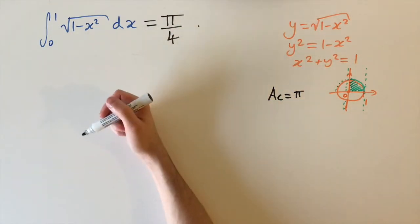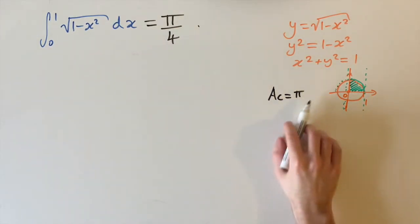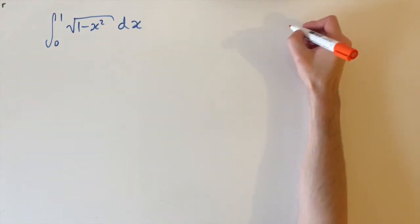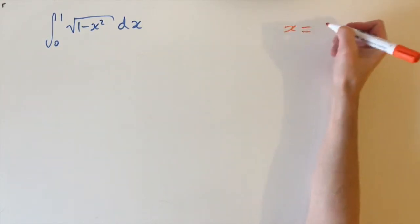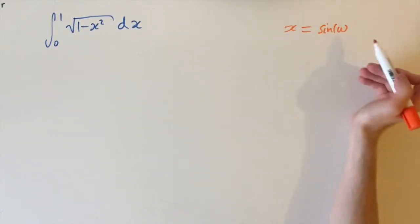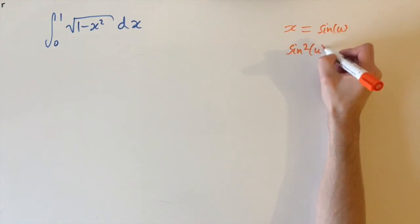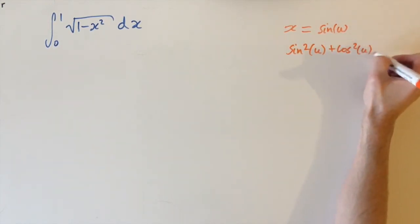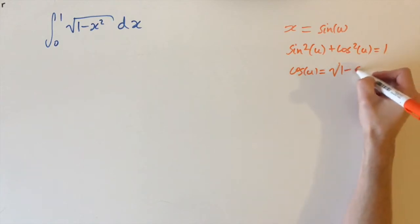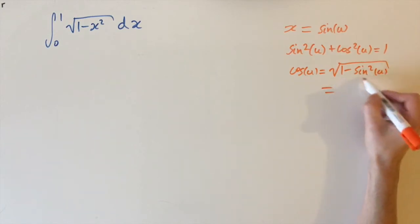I'm also going to go through a solution using a substitution to derive the answer without relying on knowledge of the area of a circle. To show this integral equals pi over 4, we use a trigonometric substitution. We define x to be sine of u — note this is done backwards from the usual substitution. The reason is the identity sine squared u plus cosine squared u equals 1, which rearranges to cosine u equals the square root of 1 minus sine squared u.